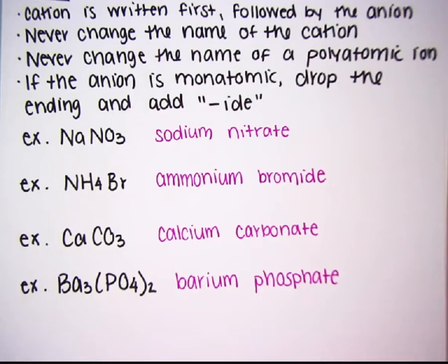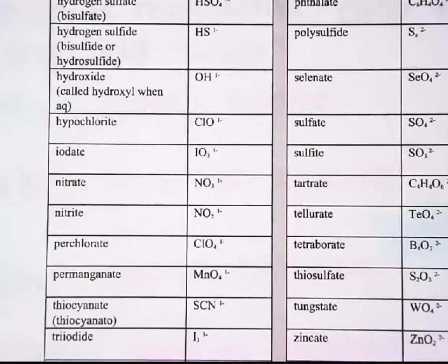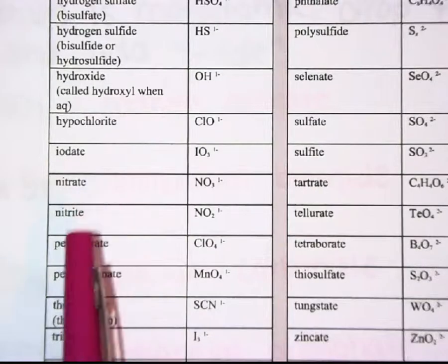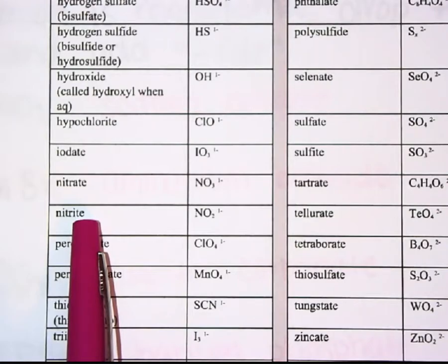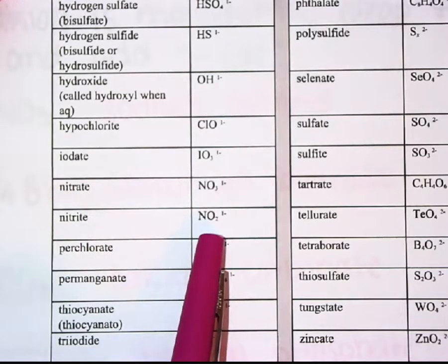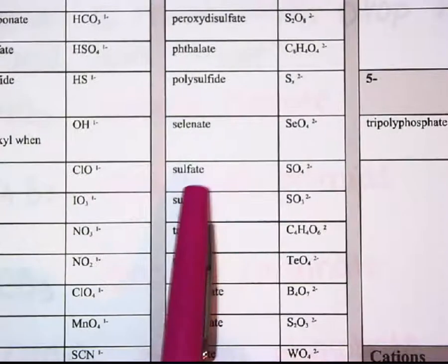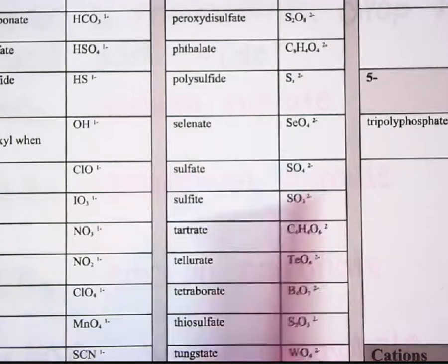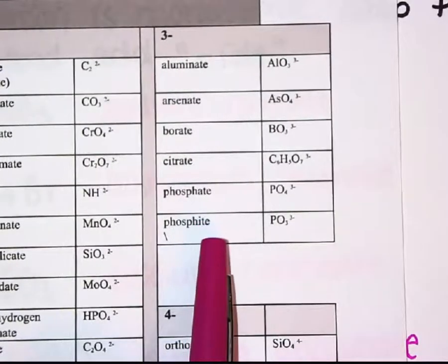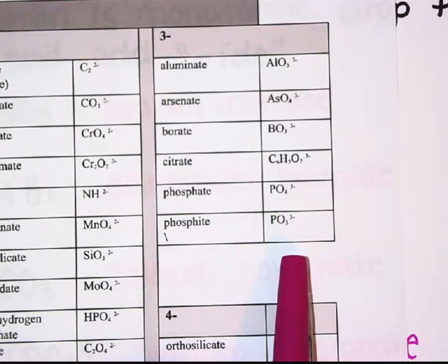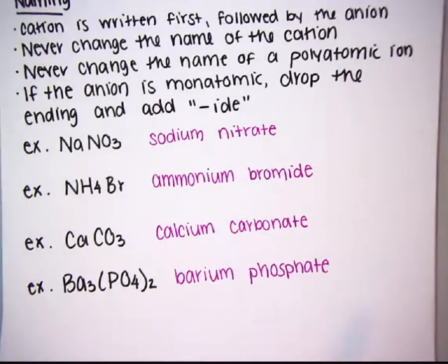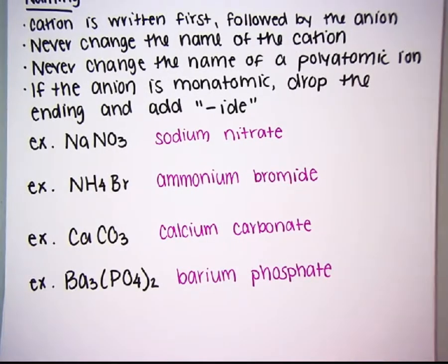The last thing I want to point out is to be very careful with your spelling. Nitrate versus nitrite — they only differ by one letter, and they also differ by one oxygen. Nitrate is NO3; nitrite is NO2. Same thing with sulfate and sulfite — they differ by one letter and one oxygen. Another example: phosphate versus phosphite. One is PO4; the other is PO3. Be extra careful when writing your names — be mindful of your spelling and the number of oxygens in that polyatomic ion.